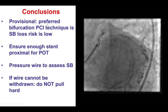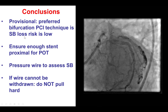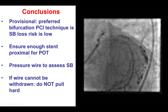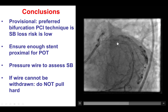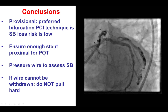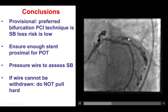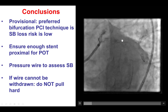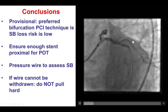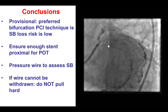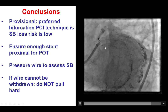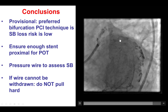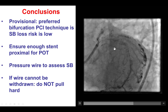In summary, for most bifurcations a provisional strategy is preferred when the side branch is significant but the risk of compromising flow is low. When doing provisional stenting, it is very important to ensure there is enough stent length proximally to allow performing the proximal optimization technique. If there is a question about side branch compromise after the main vessel stent is deployed, a pressure wire can help assess the severity of disease at the origin of the side branch. Finally, if there is difficulty pulling wires back, do not pull hard to prevent wire fracture — instead advance a small balloon or microcatheter and then pull, as that can help free the wire. Thank you very much.